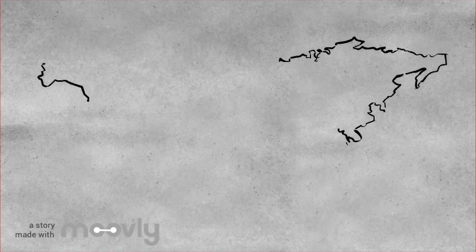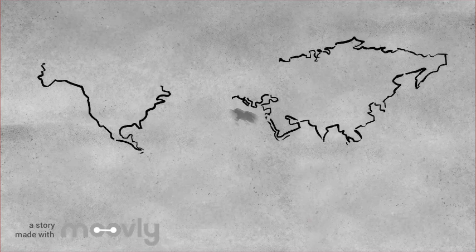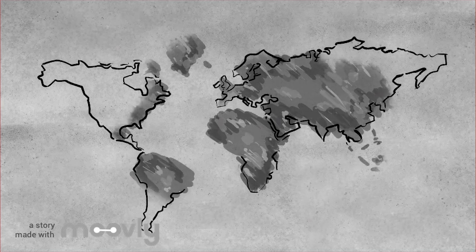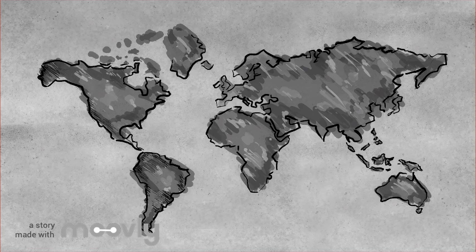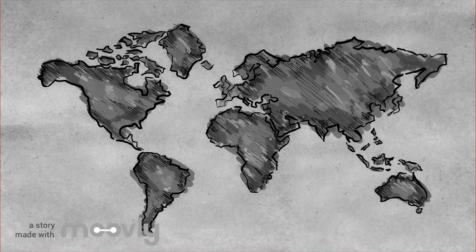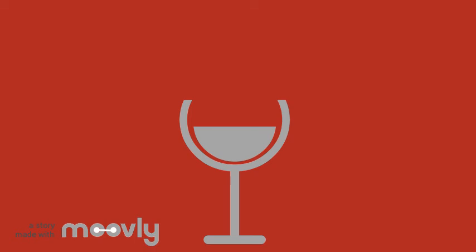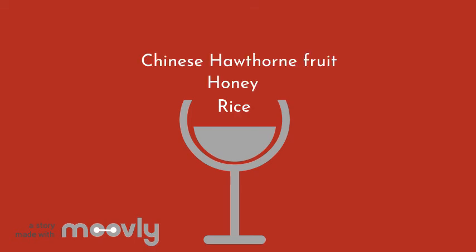Wine production has been historically linked with microbiology throughout history. Biomolecular archaeological evidence has shown that wine production could have started 9,000 years ago in China. Further analysis concluded that this first fermented beverage was a mixture of rice, honey, and the Chinese hawthorn fruit.